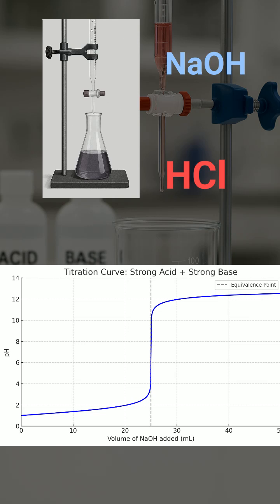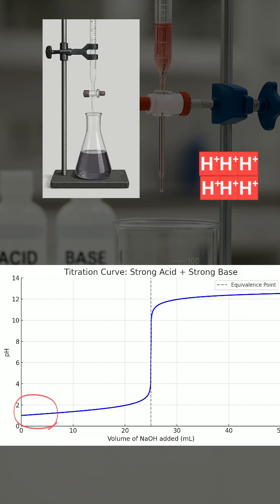The titration begins with the strong acid in the flask, so the pH starts very low.